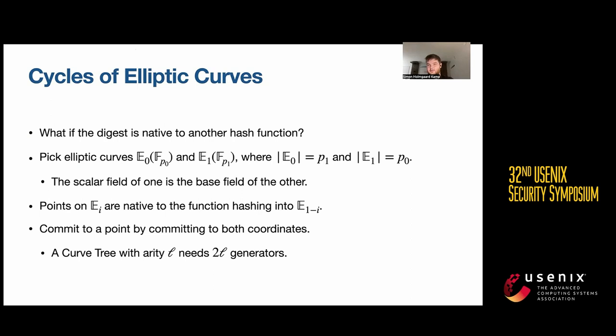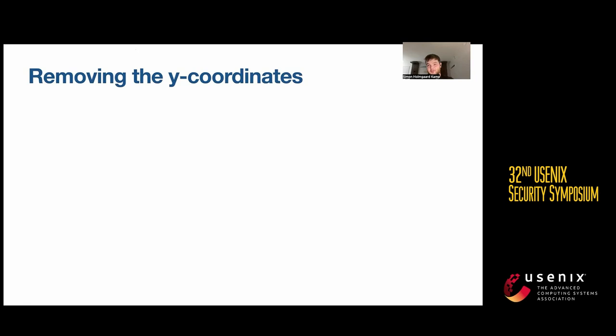A curve tree with arity L would need two L generators to work. And we can't do better. So we remove the Y coordinates.